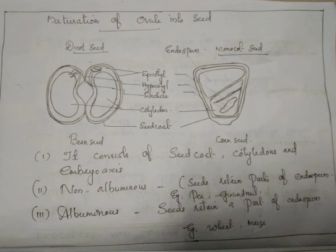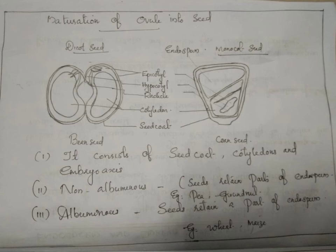Non-albuminous seeds have no residual endosperm as it is completely consumed during embryo development — examples include pea and groundnut. Albuminous seeds retain a part of endosperm as it is not completely used during embryo development — examples include beet, castor, sunflower, and maize. In some seeds such as black pepper and beet, remnants of nucellus are also persistent, and this is called perisperm.